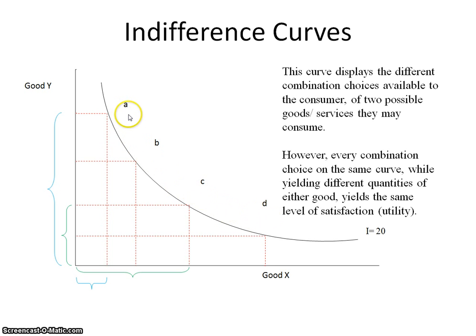We realize with combination choice A, the consumer can have this blue bracket, this amount of good Y, and therefore a smaller amount of good X. Or, we could choose combination choice C, which would give them more of X, represented by this green bracket, and less of Y.